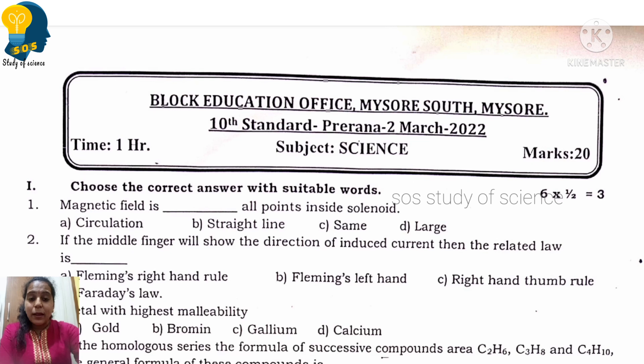When we look at the first question, magnetic field is dash all points inside the solenoid. So magnetic field is the same inside the solenoid. In all points inside the solenoid, magnetic field is the same. So the right answer is option C.